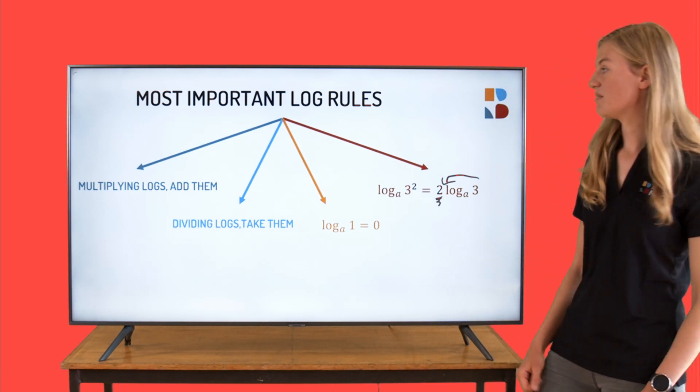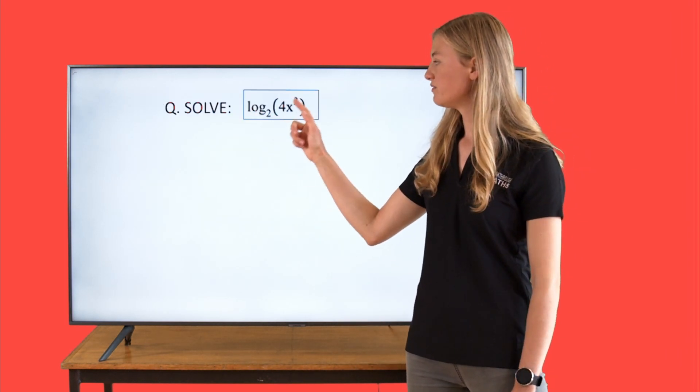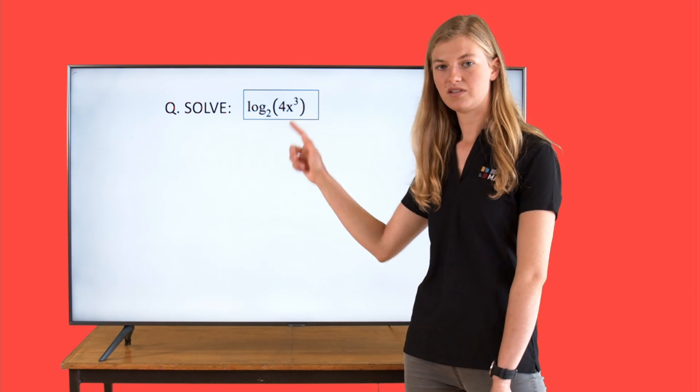Let's have a look at our example. Log to the base 2, 4x cubed.